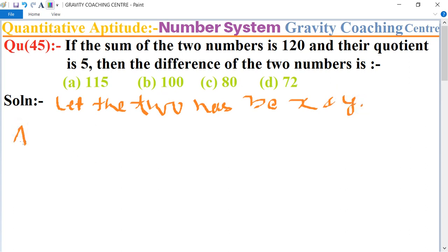According to the question, their sum x plus y equals 120, and their quotient is 5, means x divided by y equals 5, so this implies that x equals 5y.